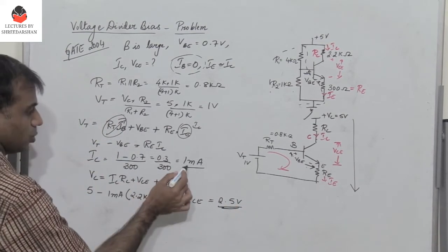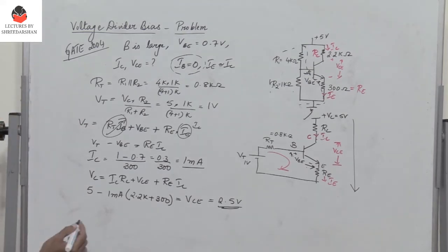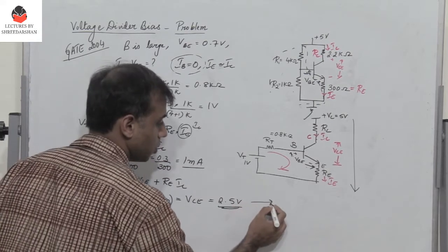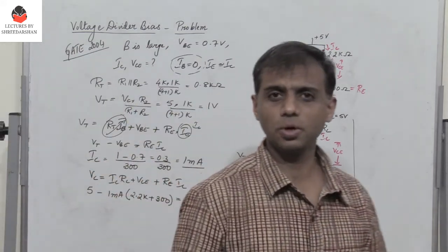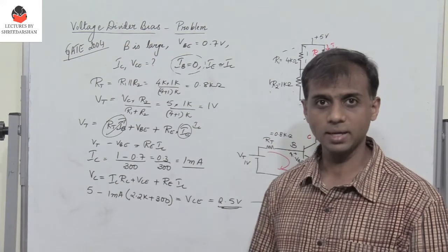So Ic is 1 milliampere, Vce is 2.5 volts, and that corresponds to option C. So among all the 4 options, the right option is C. This is a fairly simple problem which has been given in GATE 2004, a problem based on voltage divider bias.